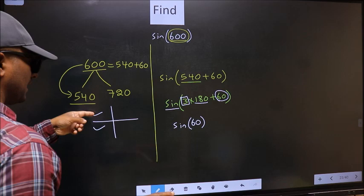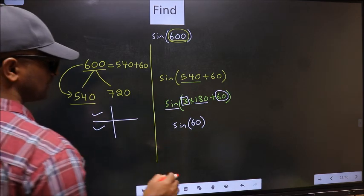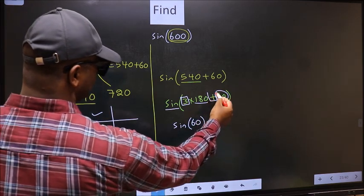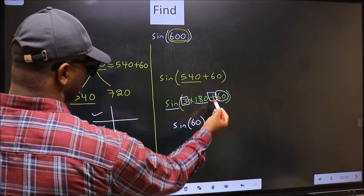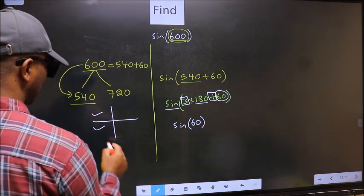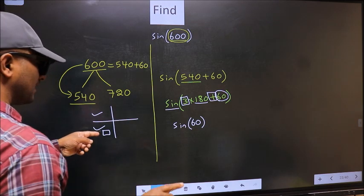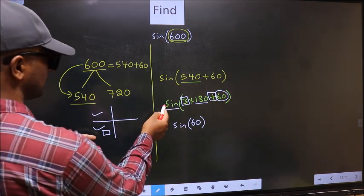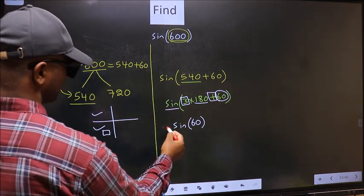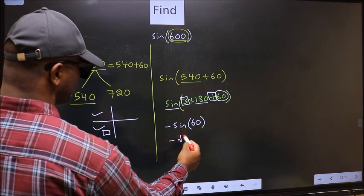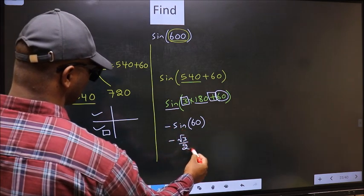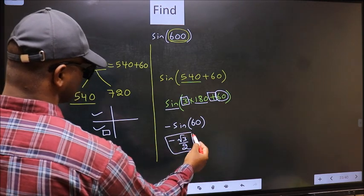So now to select the quadrant, we should look at this symbol. Here we have plus. That means the angle lies in the third quadrant. And in the third quadrant, sine is negative. So we should put negative. So negative sine 60 is root 3 by 2. This is our answer.